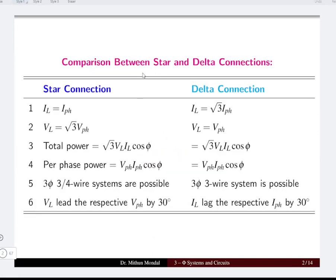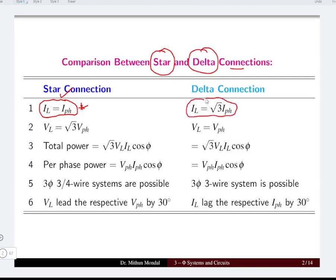Before we start solving the numericals, let us see a quick revision of the comparison between the star and the delta connected network. In the star connected network, the line current is equal to the phase current, whereas in the delta connected network, the line current is root 3 times the phase current.